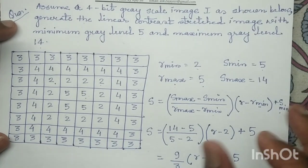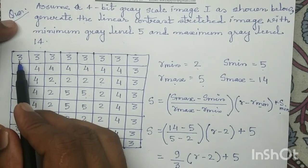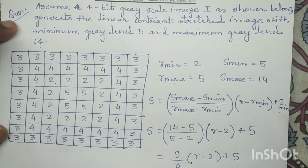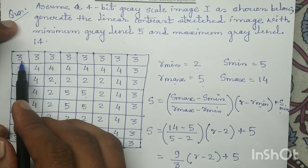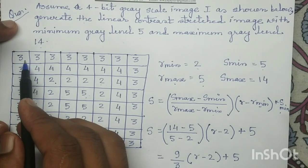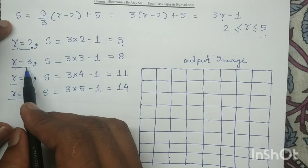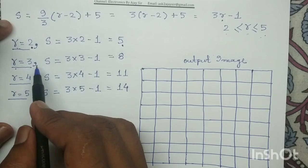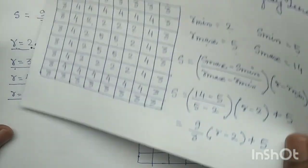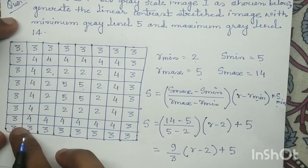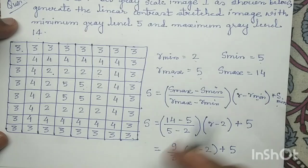The outermost cells have a gray level equal to 3. After performing contrast stretching, if the input image has a gray level of 3, in the output image you assign a new gray level equal to 8. So wherever in the input image the gray level is 3, in the output image you map it to the new gray level of 8.